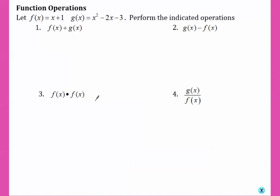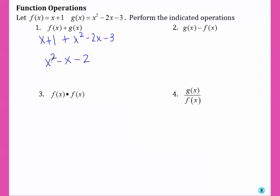For function operations, let f of x equal x plus 1 and g of x equal x squared minus 2x minus 3. Perform the indicated operations. Number one wants us to take f of x and add it to g of x. So f of x plus g of x — all we have to do is combine like terms — and we get x squared minus x minus 2.